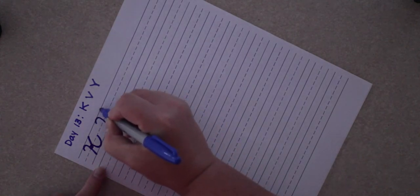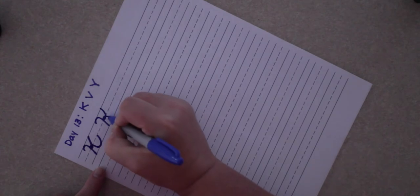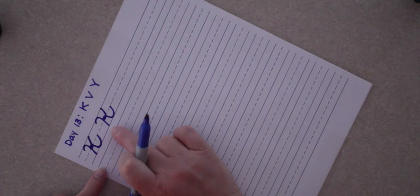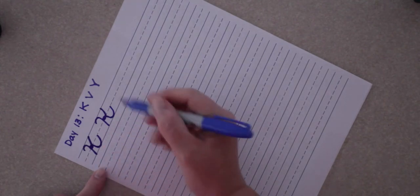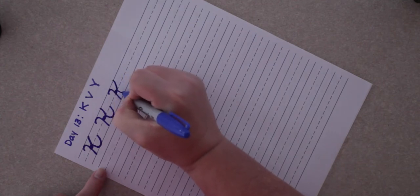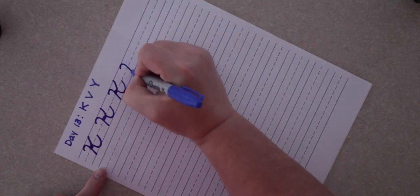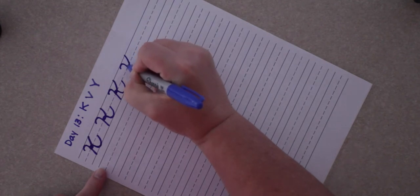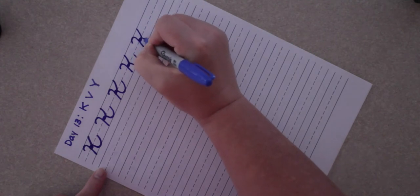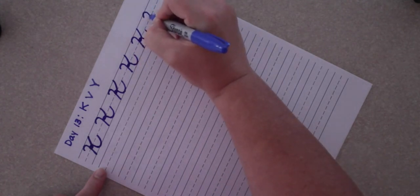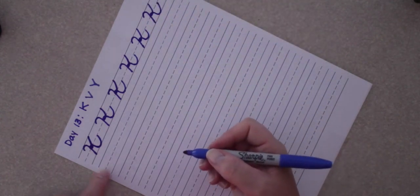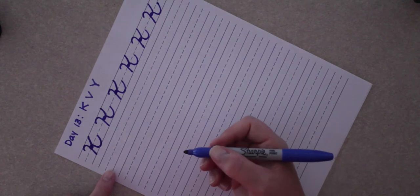Now you want this to look like a K. You don't want it to look like an H, so be really careful about that. You can pause and make a row of capital K.